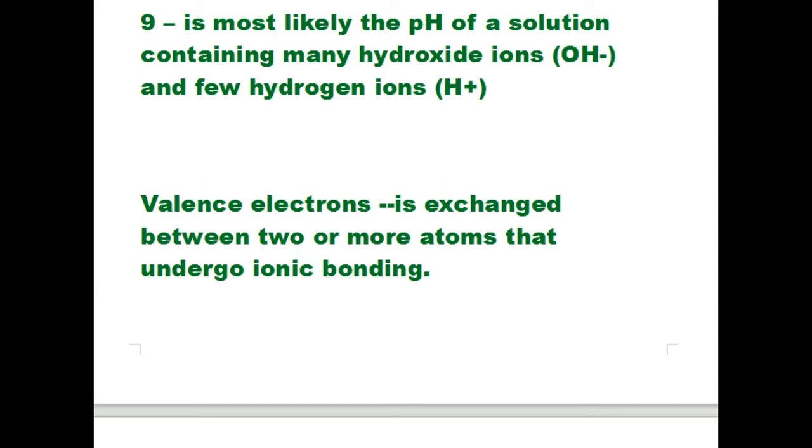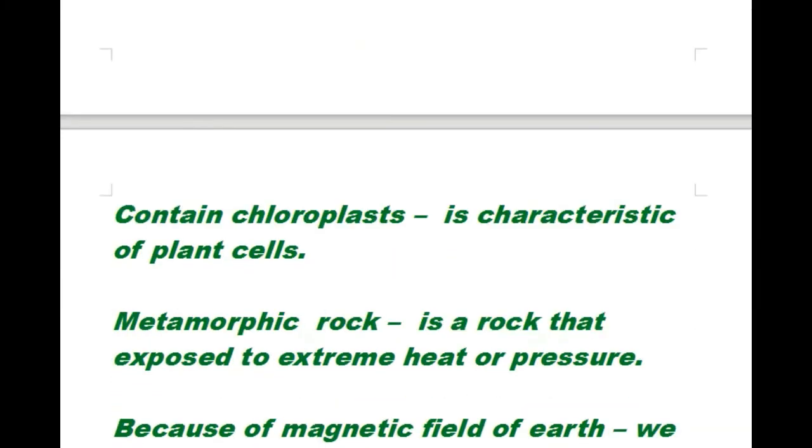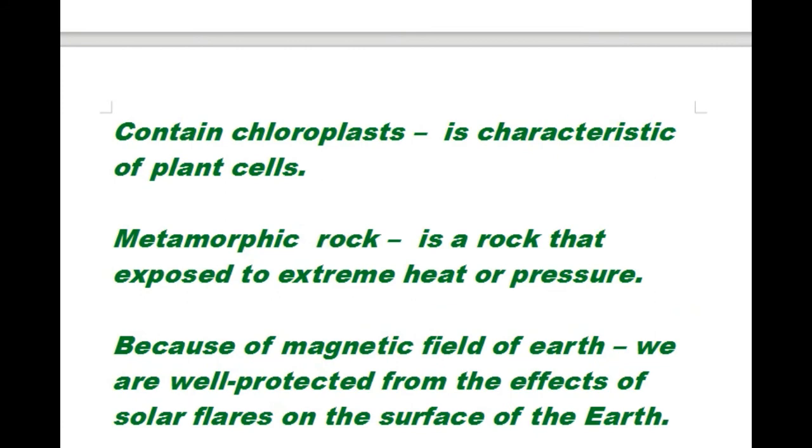Nine is most likely the pH of a solution containing many hydroxide ions and few hydrogen ions. Valence electrons are exchanged between two or more atoms that undergo ionic bonding. Chloroplasts are characteristic of plant cells.